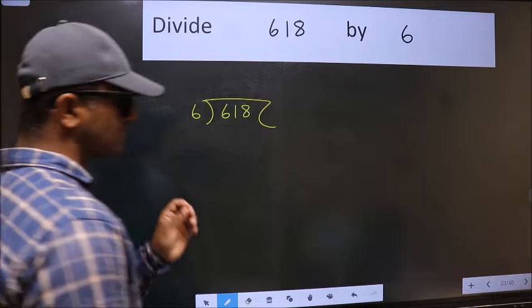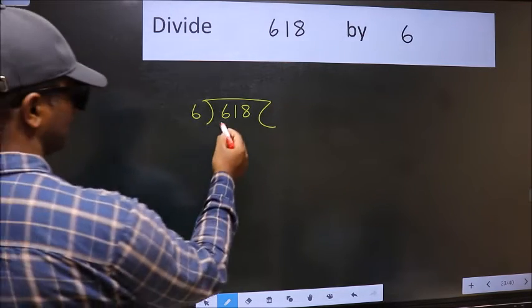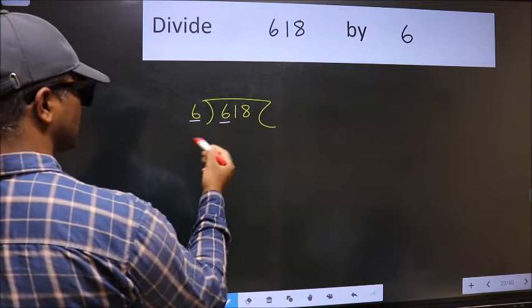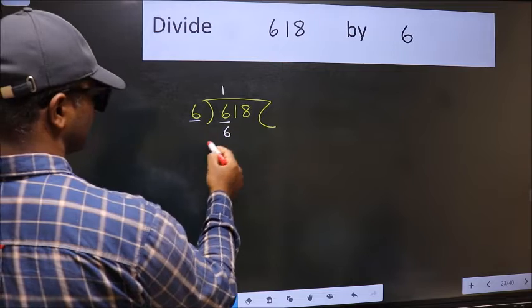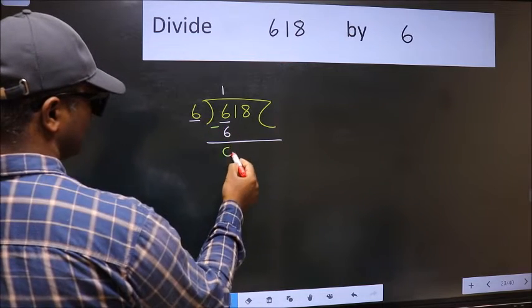This is your step 1. Next, here we have 6, here also 6. When do we get 6 in the 6 table? 6 once is 6. Now we should subtract. We get 0.